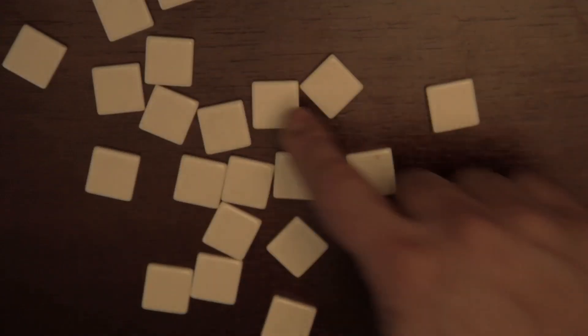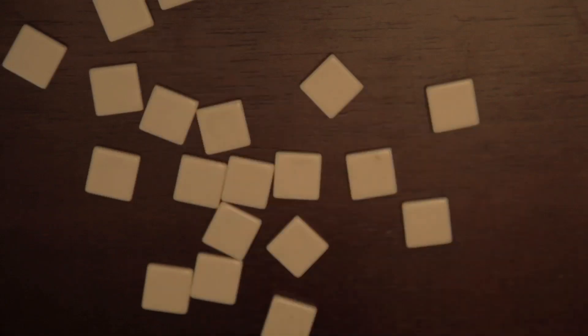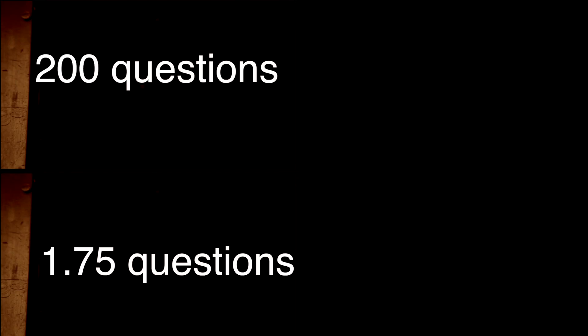Machine 2 requires 1.75 bounces. We need to ask 1.75 questions on average. Meaning, if we need to guess 100 symbols from both machines, we can expect to ask 200 questions for Machine 1 and 175 questions for Machine 2.